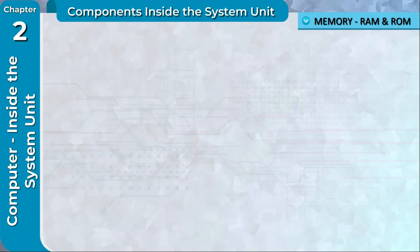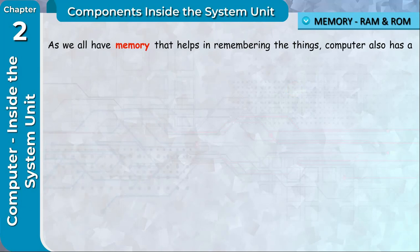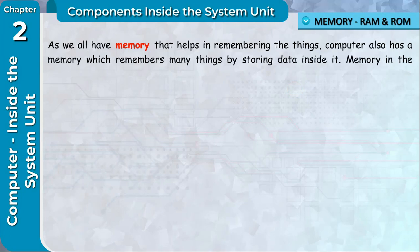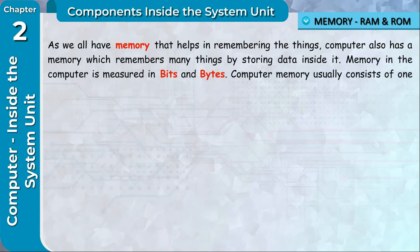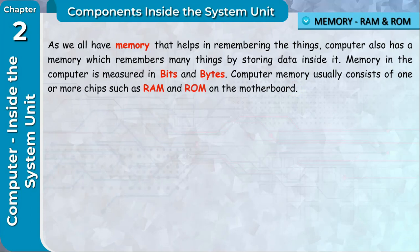Memory — RAM and ROM: As we all have memory that helps in remembering things, a computer also has memory which remembers many things by storing data inside it. Memory in the computer is measured in bits and bytes. Computer memory usually consists of one or more chips such as RAM and ROM on the motherboard.